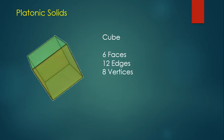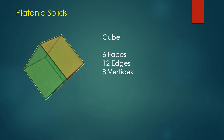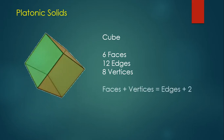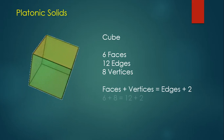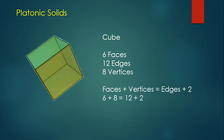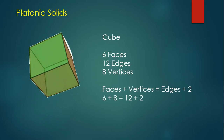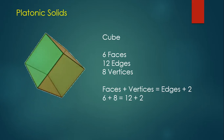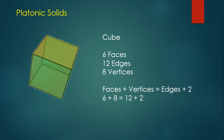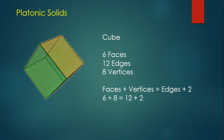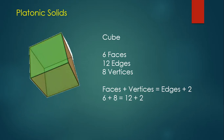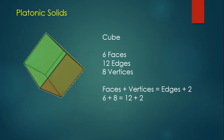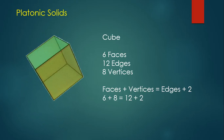Let's see if we can verify Euler's theorem for this cube. The faces plus vertices is 8 plus 6, and its edges plus 2 is 12 plus 2. 14 does equal 14, so we can see that Euler's theorem is verified for this cube.